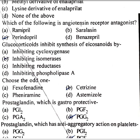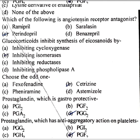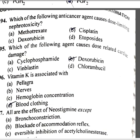Choose the odd one: cetirizine. Prostaglandin which is gastroprotective is prostaglandin E2. Prostaglandin which has anti-aggregatory action on platelets is prostaglandin I2. Which of the following anti-cancer agents causes dose-limiting nephrotoxicity? Cisplatin. Which of the following agents causes dose-related cardiac damage? Doxorubicin.